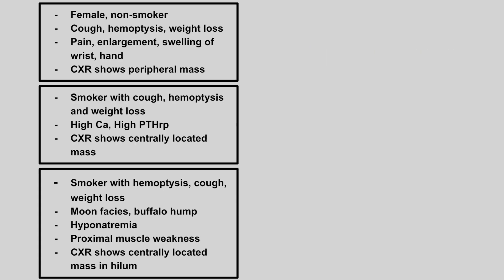Now we have a female non-smoker who has a cough, hemoptysis, and weight loss. She has pain and enlargement and swelling of the wrists and hands, and chest x-ray shows a peripheral mass. This is an adenocarcinoma.